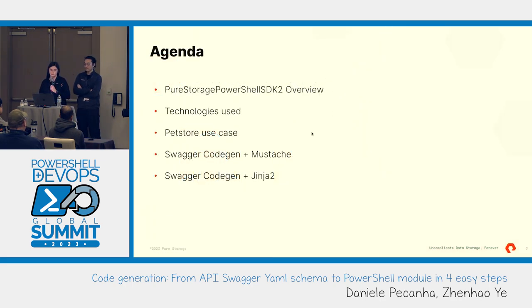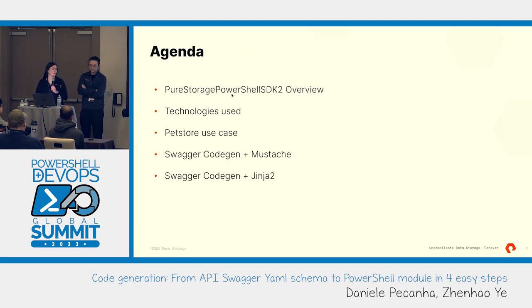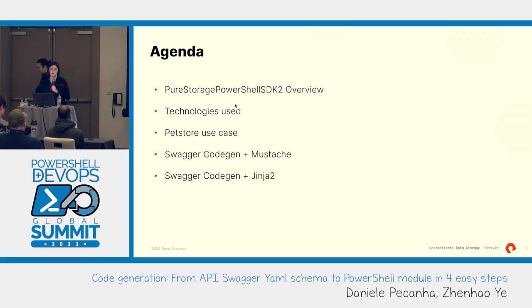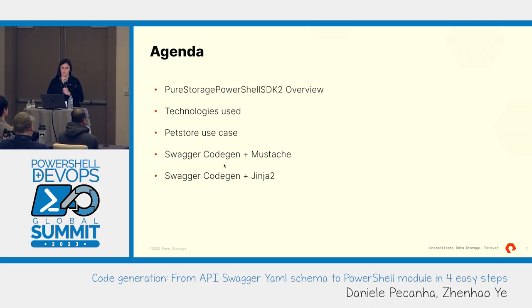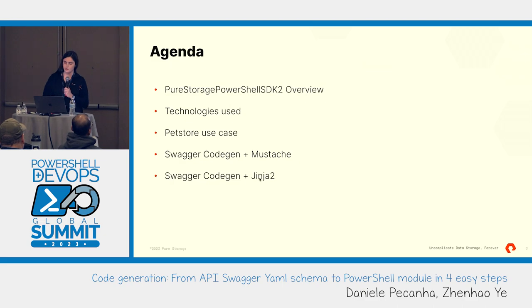Quickly through our agenda today: we'll briefly show our real case scenario, which is the PowerShell SDK 2, and what we achieved there. We'll briefly talk about the technologies we used, then introduce a simpler example — the Pet Store — to make the demos easier to follow. We'll go through two approaches: one with Mustache and one with Jinja2, so you can see which is better for your case.